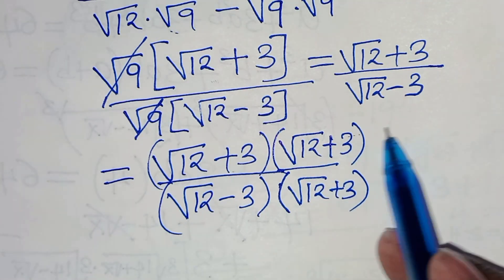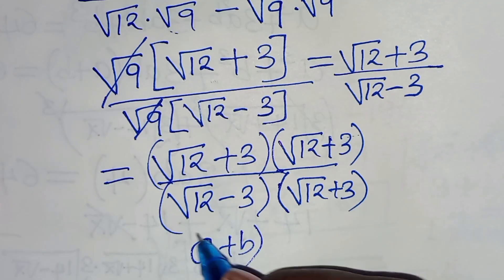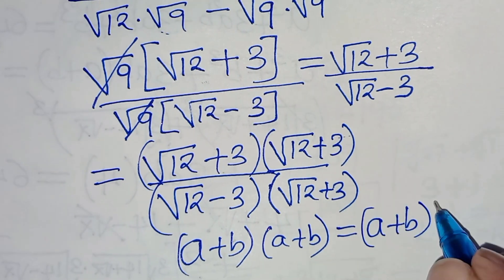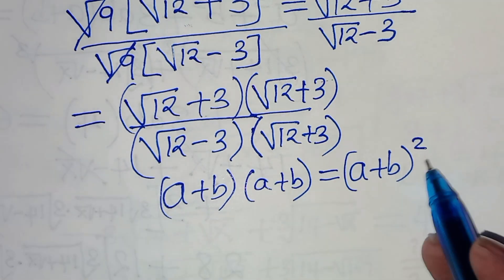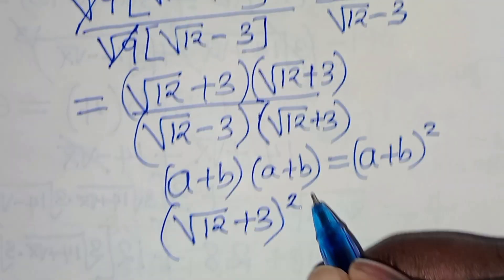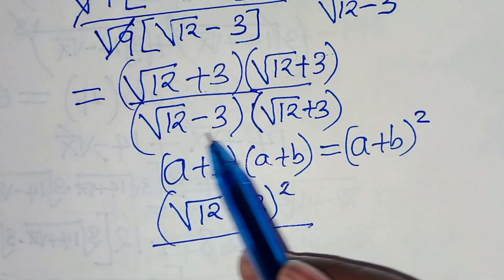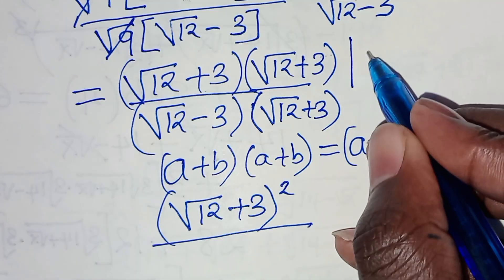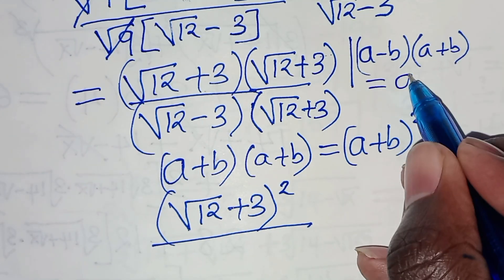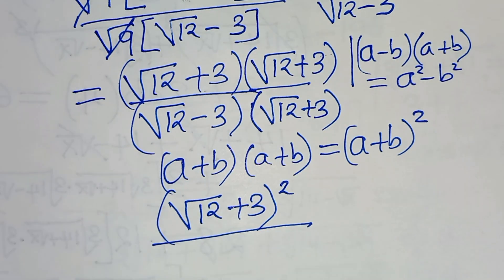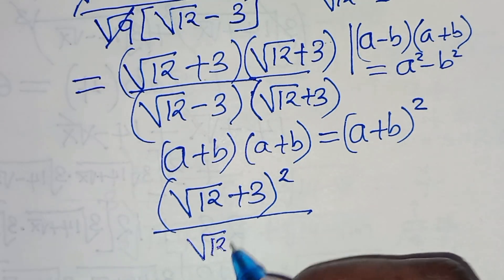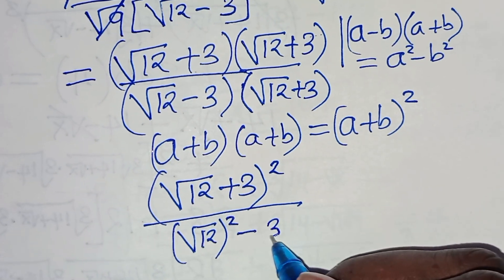In the denominator, this is in the form of a minus b times a plus b, which is equal to a squared minus b squared — the difference of two squares identity. Applying this identity in the denominator, we get square root of 12 raised to the power of 2, subtract 3 raised to the power of 2. In the numerator, this is in the form of a plus b raised to the power of 2.